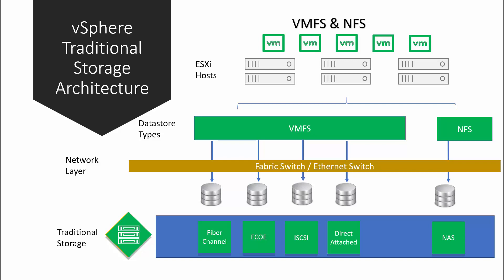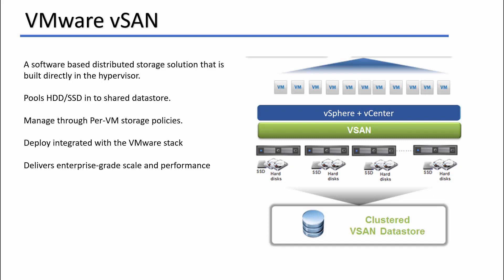VMware vSAN is a software-based distributed storage solution. You don't need a dedicated storage box — this is a software-based solution that can run on any x86 hardware. It is built directly into the hypervisor, so when you install ESXi on a server, vSAN is already there. If you have a license, you can start using it by enabling it from VMware vCenter.